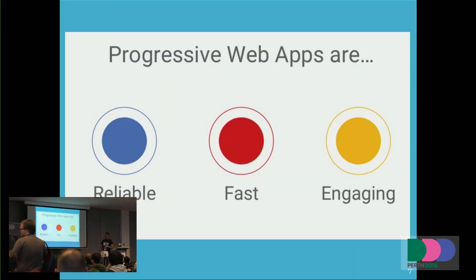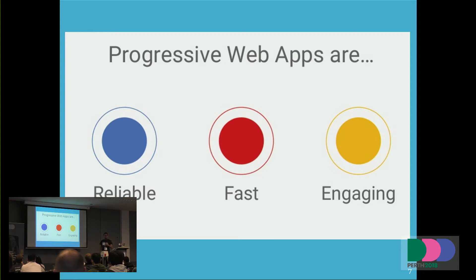Just quickly recapping — this is not an introduction section. Progressive web apps should be reliable, working in any network condition. They should be fast, rendering at less than 60 frames per second. And they should be engaging, meaning real-time notifications and all that kind of stuff.